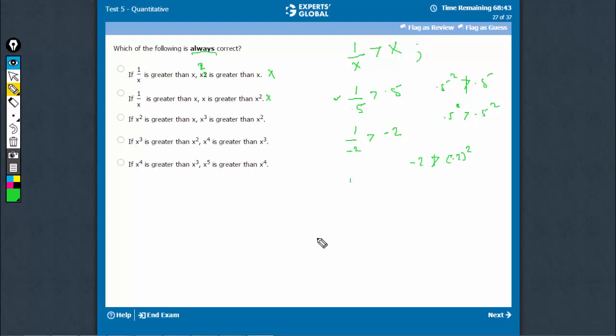If x square is greater than x, this is definitely not correct. For negative values, minus 2 square is greater than minus 2. It does not mean that minus 2 cube is greater than minus 2. Minus 2 cube would be a more negative number which would not be greater than minus 2. Definitely not the right answer.